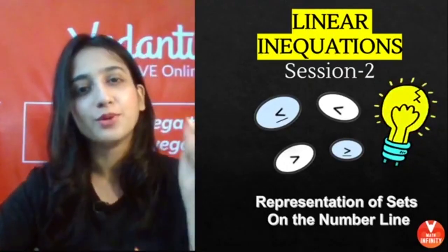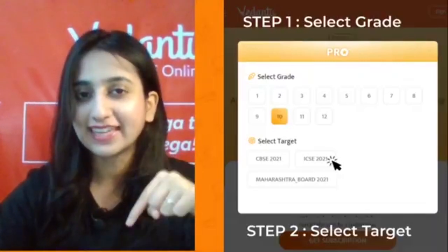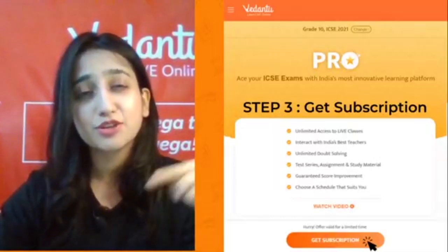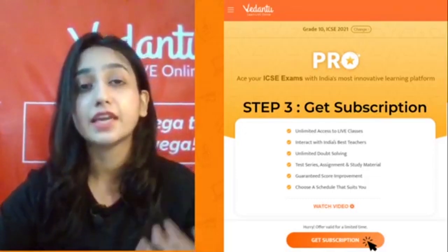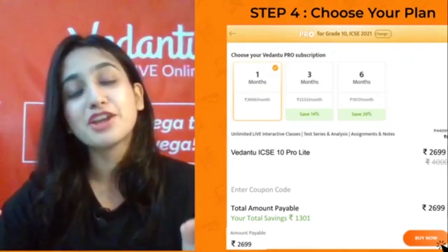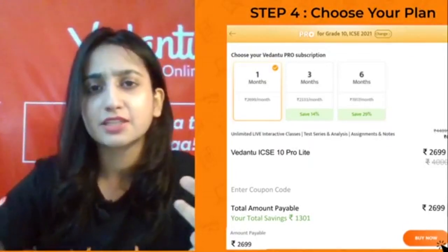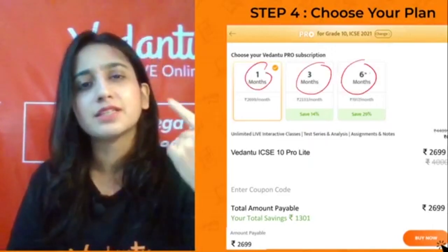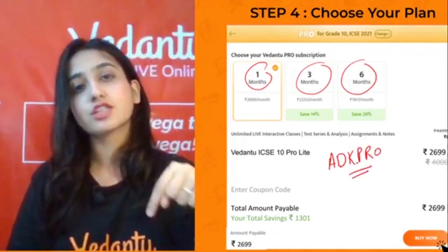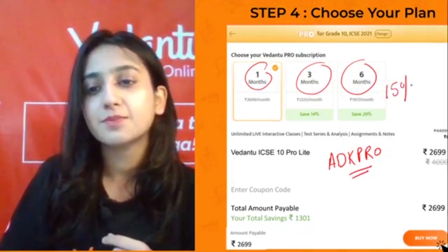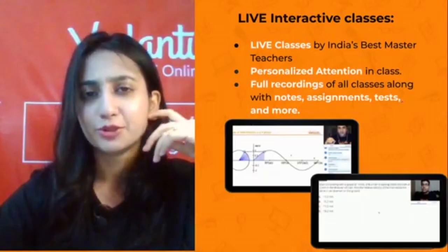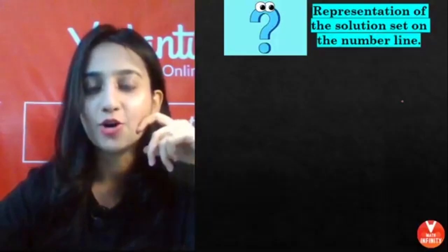But before that let me tell you Vedantu has come up with this Pro subscription. You just have to click on the link given in the description box below and select the grade and target whether ICSE or CBSE, then click on get subscription button. What do you get? You get everything guys - tests, PDFs, assignments, notes, recorded sessions, live sessions, everything. Even personalized attention from your favorite teachers. One month plan, 3 months, 6 months - you can choose whatever plan you like. There's even a discount if you use the coupon code ADKPRO, given in the description box below. You will get 15% discount. So choose your plan. Now moving on to our session.